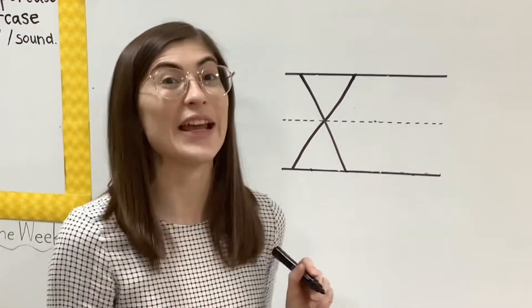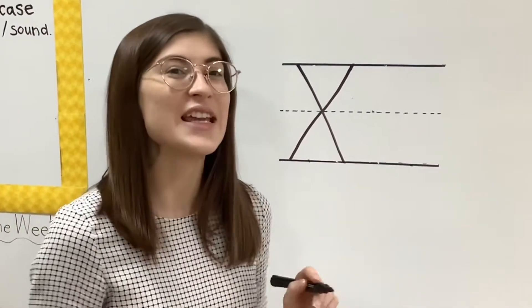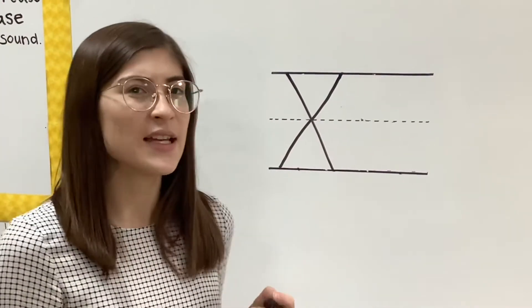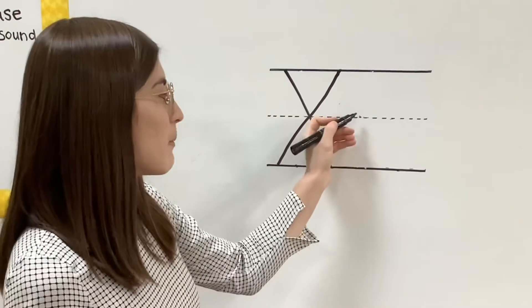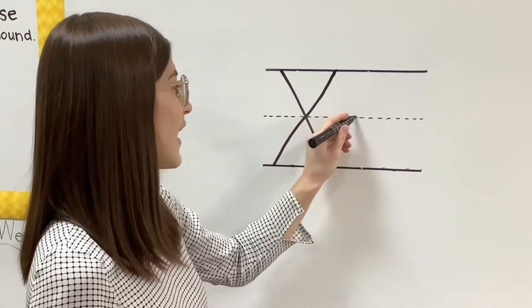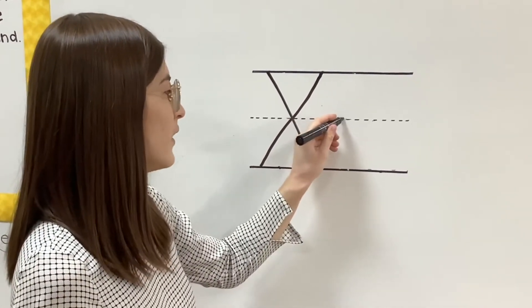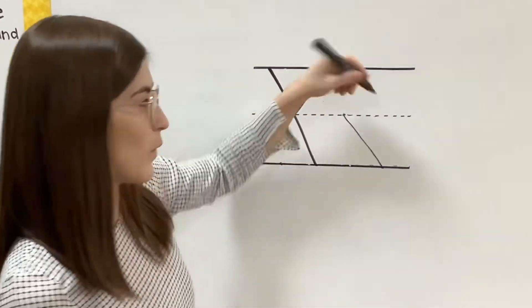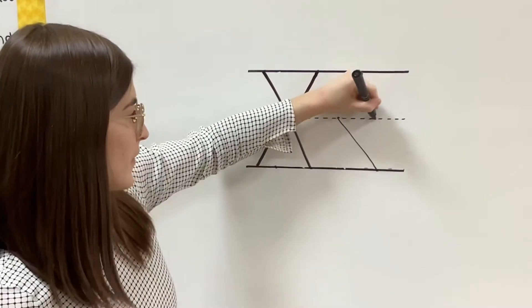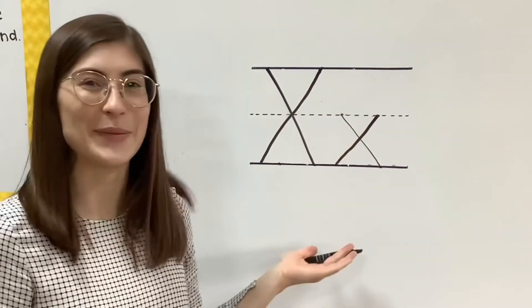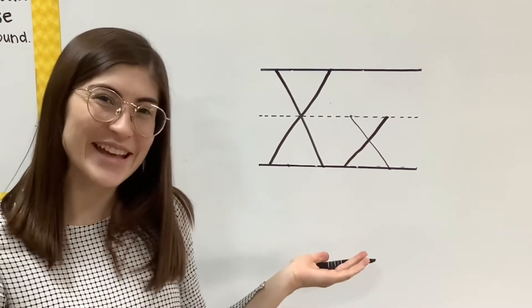Okay, now lowercase is just like uppercase X, but we go from the middle down to the bottom. Diagonal line again, and one more time, and then we have the letter X.